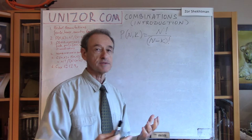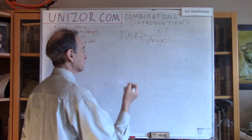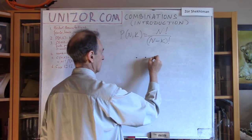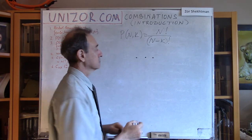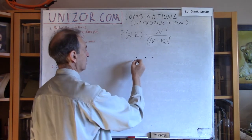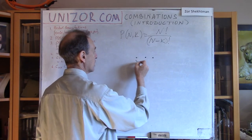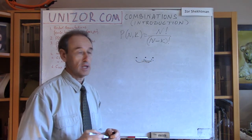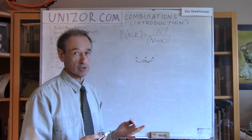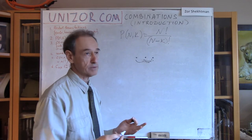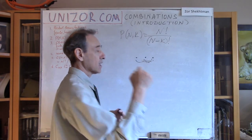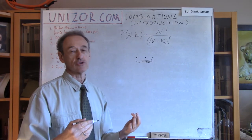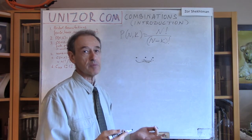Let's think about this: if you have a certain subset of a set and then you change the order within that subset only, it will produce different partial permutations — obviously. But from the combination standpoint, when we don't care about order, it will be the same combination.